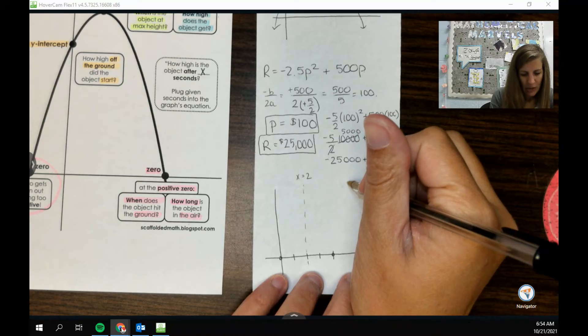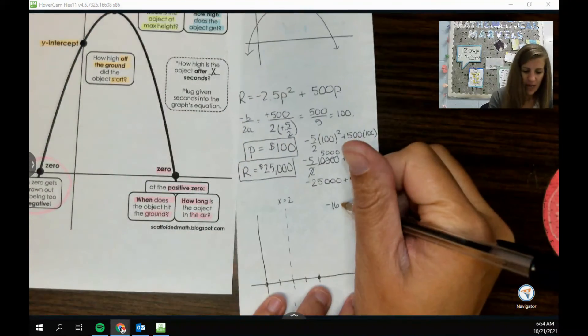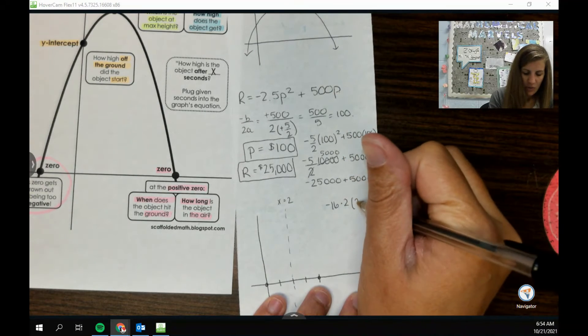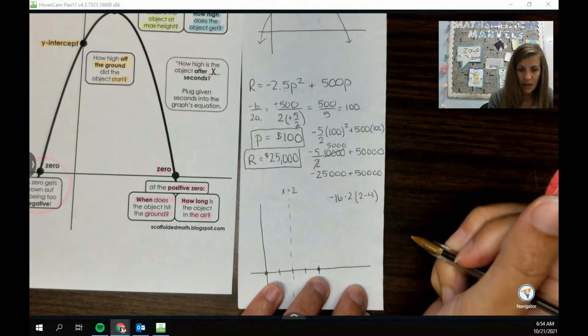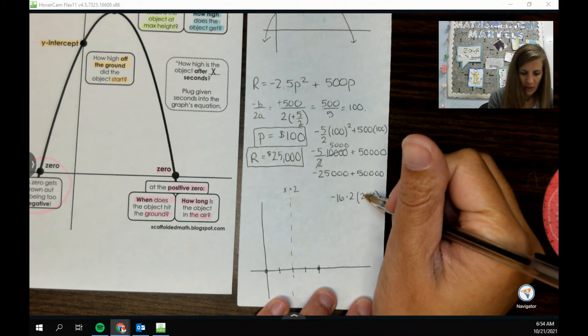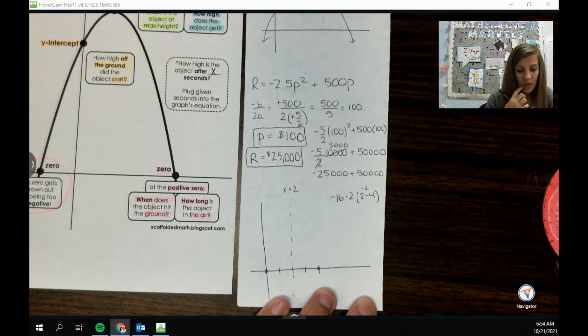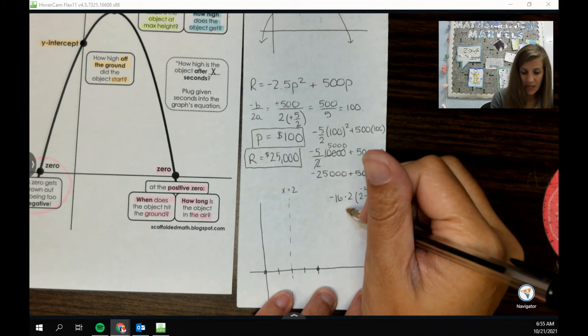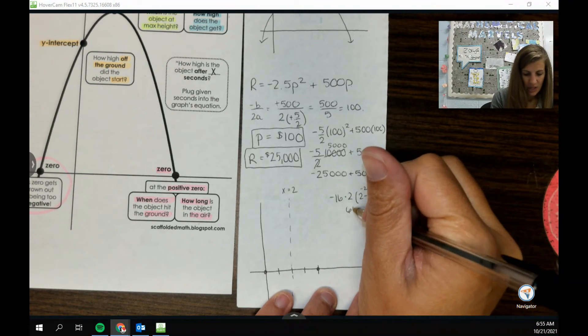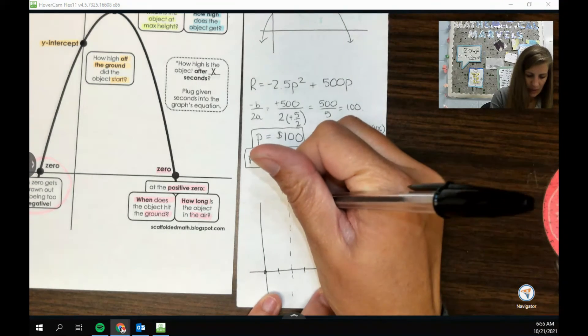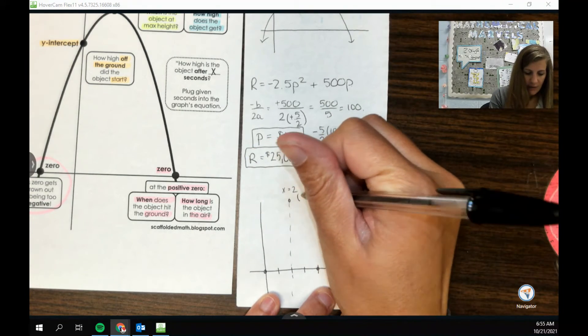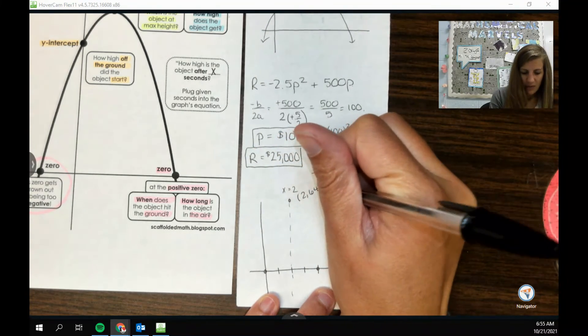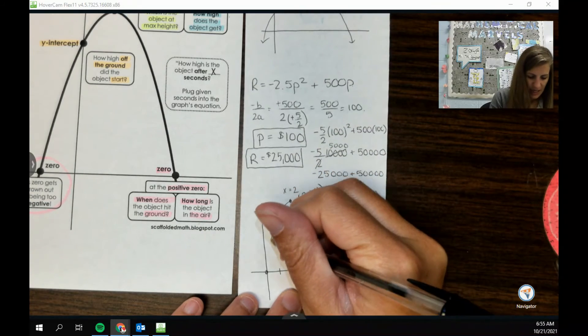So we're going to take that two and plug it into our equation. So we have negative 16, I believe yeah, times two times two minus four. So over here we'll also have a negative two, so the negatives will divide out. And really what we end up here with here is four times 16, which is 64. So our vertex is at 2 comma 64 right here, which seems pretty high.